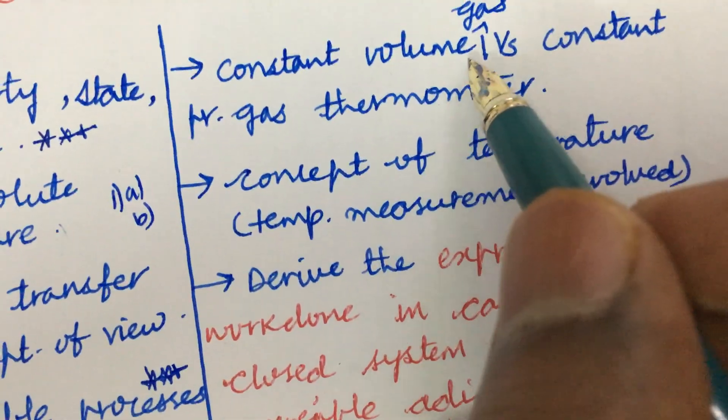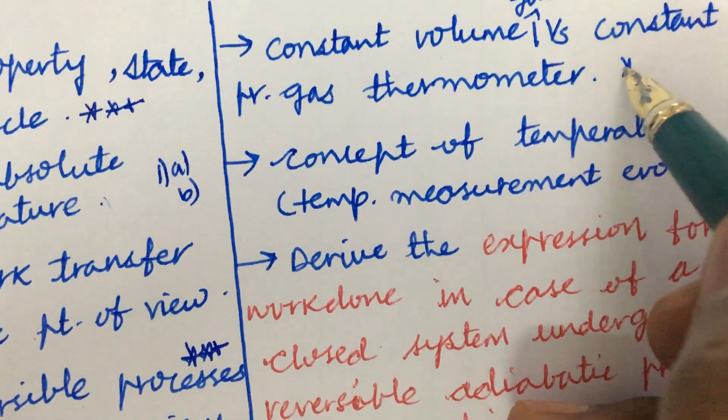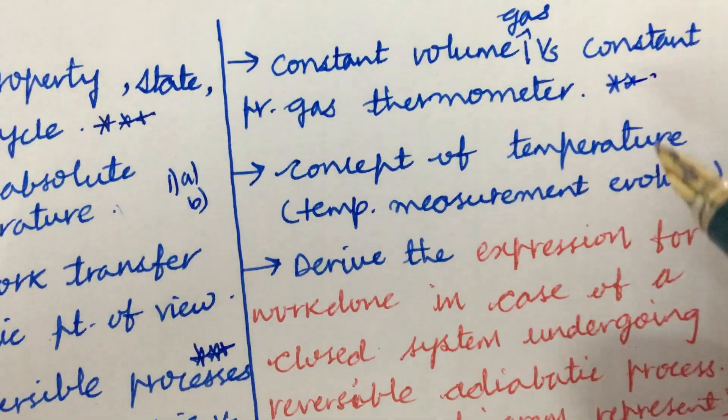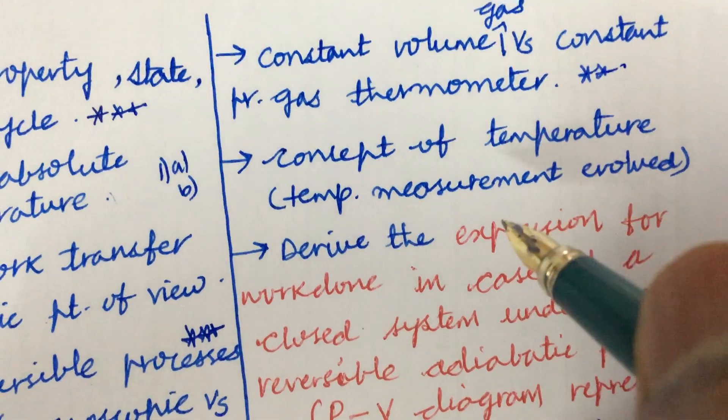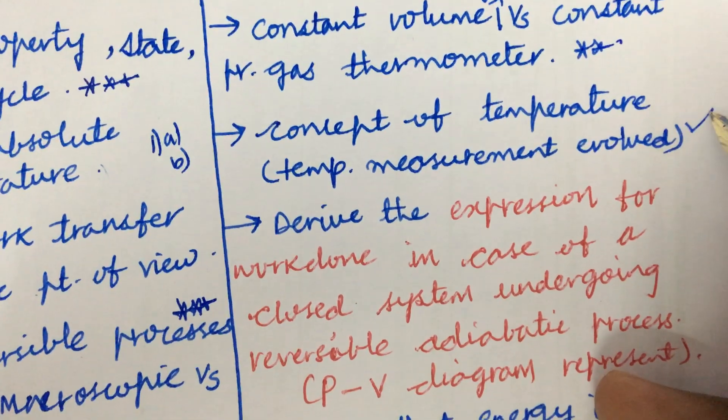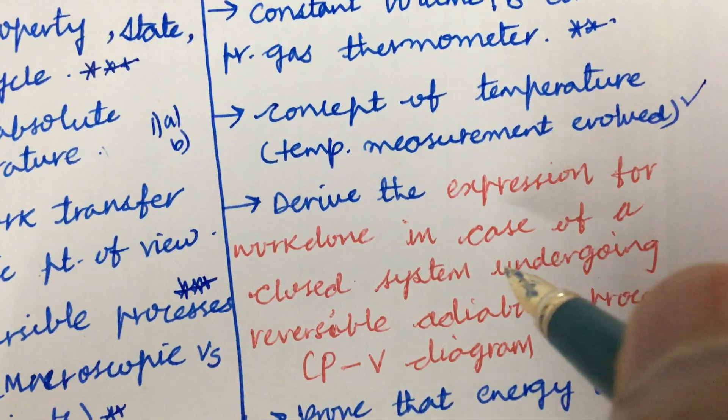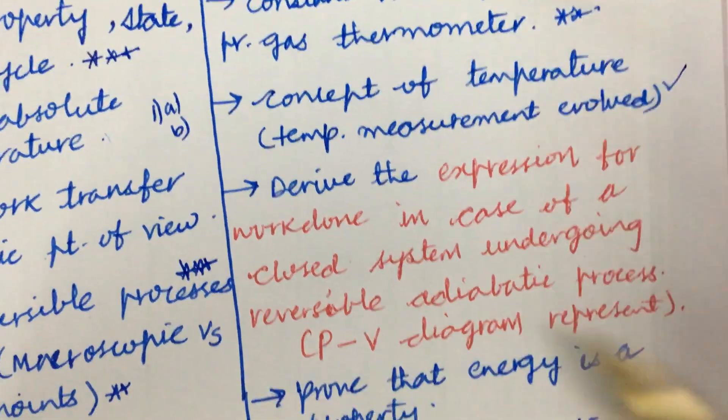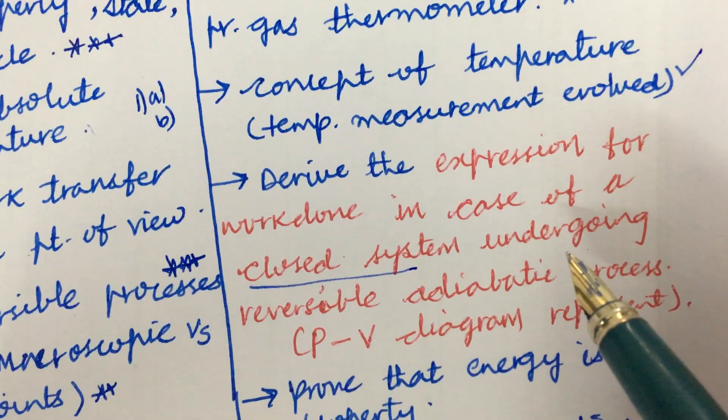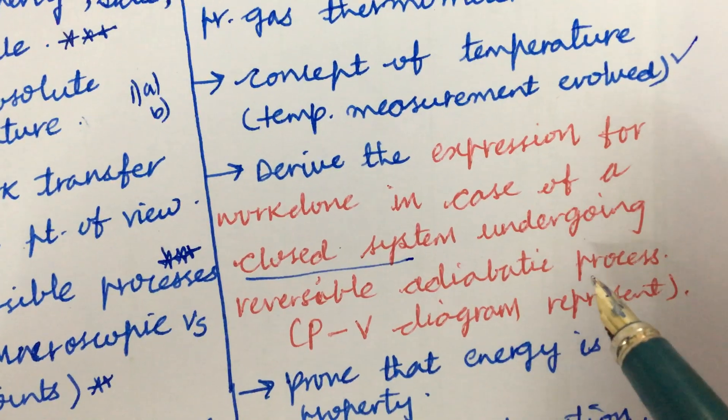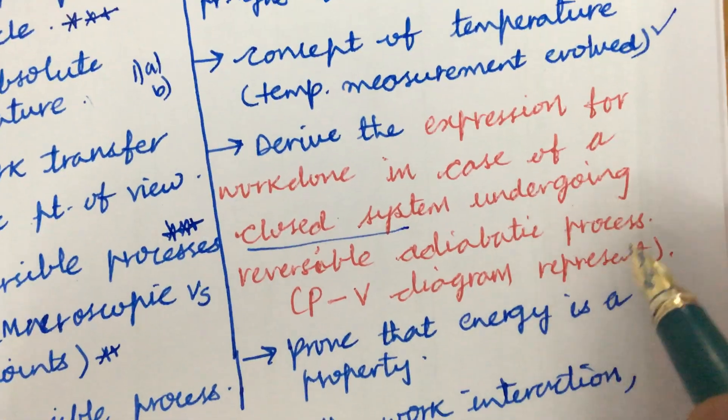The constant volume gas versus constant pressure gas thermometer and the differences, and the importance and the concept of temperature, temperature measurement and how it is evolved. And derive the expression for work done in case of closed system. Related to the closed system, you are going to get a derivation for reversible adiabatic process and also represent the PV diagram.